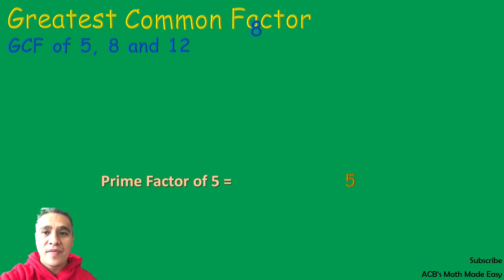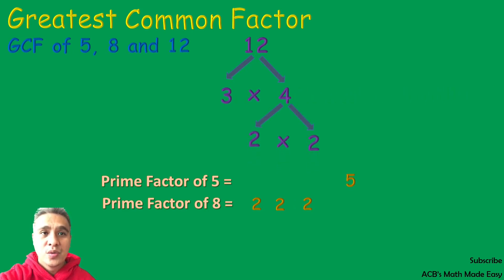8 can be factored out by 2 times 4. 4 can be factored out by 2 times 2. The prime factors of 8 are 2, 2, and 2. The prime factors of 12 are 2, 2, and 3.